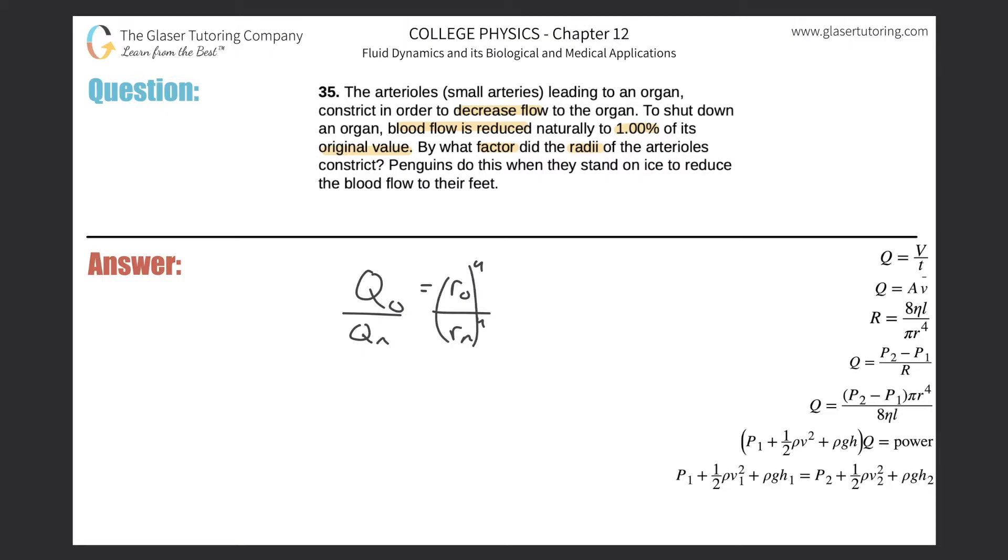Just reworking this equation, I can write something like this: I can write Q sub o over Q sub n is going to be equal to ro over rn, and this whole thing raised to the fourth power. Now it told us that the blood flow will be reduced to one percent of its original value. So what they're telling me is that the new flow rate here will be one percent, or 0.01, times its original value Q sub zero.